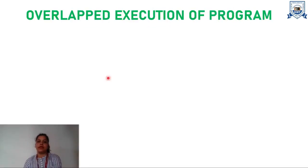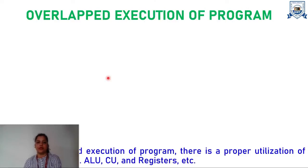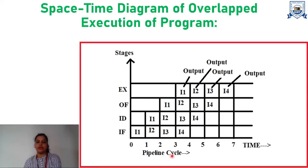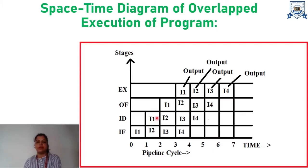Now let's try to understand the concept of overlapped execution of a program in contrast to the sequential execution of a program. In overlapped execution of a program, there is proper utilization of the resources like the ALU, CU, and registers. This is the space-time diagram of overlapped execution of the program. In this diagram, we have the four stages that belong to an instruction and the time is represented on the x-axis. In this pipeline cycle, from time 0 to 1, the first stage of instruction 1 is executed. From time 1 to 2, two instructions are executing simultaneously: the first stage of instruction 2 and the second stage of instruction 1.